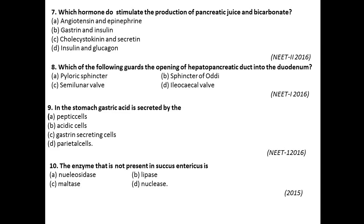Question number eight: Which of the following guards the opening of the hepatopancreatic duct into the duodenum? The sphincter of Oddi is the guard which prevents and protects the hepatopancreatic duct into the duodenum. So the answer is option B. In the stomach, gastric acid is secreted by parietal cells, which are present in the stomach and are essential for the production of gastric acids.